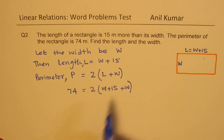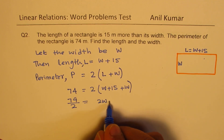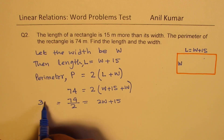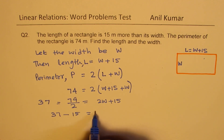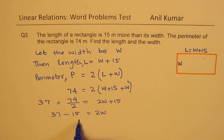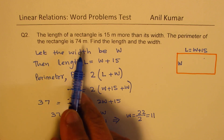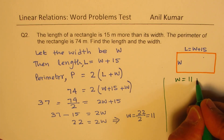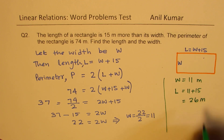One option is to open the bracket; the other is to divide by 2. We'll divide: 2W plus 15. When you divide 74 by 2, you get 37. Now we can isolate W. So 37 minus 15 equals 2W, which gives 22 equals 2W. From here, width equals 22 divided by 2, which is 11. Be sure to use units in your answer. So width equals 11 meters, and length equals 11 plus 15, which is 26 meters.